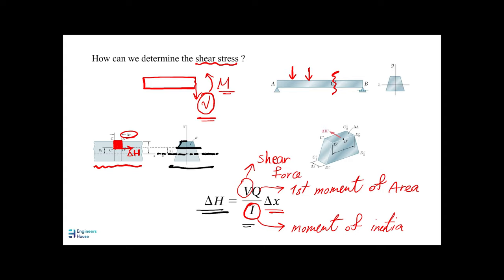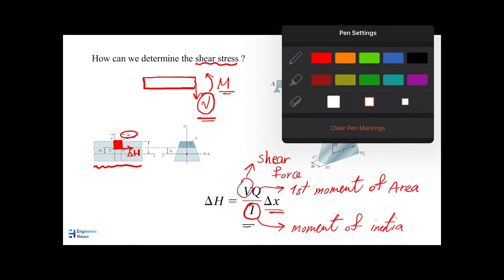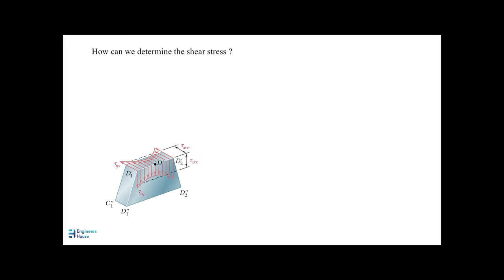The Q area is the portion for which we need to find the shear stress, so we write the equation for the place where we want to find it. We will solve some examples to see how this really works. We have calculated delta H, but we also need to calculate the shear stress. Consider that element again — it is applied to a shearing force, and we can see the distribution of the shear stress. We know delta H equals V times Q divided by I times delta x.